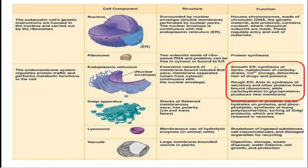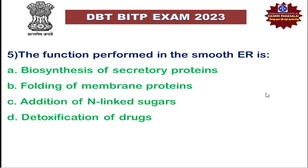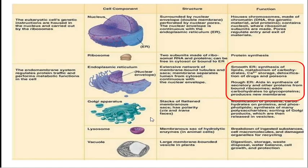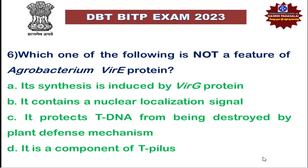In rough ER, post-translational modification of proteins occurs — including protein folding, disulfide bond formation, and glycosylation. Specifically, N-linked glycosylation takes place in the rough ER, while O-linked glycosylation is done in the Golgi apparatus. The function performed by smooth ER includes detoxification of drugs. Addition of N-linked sugar occurs in the rough ER, while addition of O-linked sugar is done in the Golgi apparatus. We'll continue in part 2. Thank you for watching.